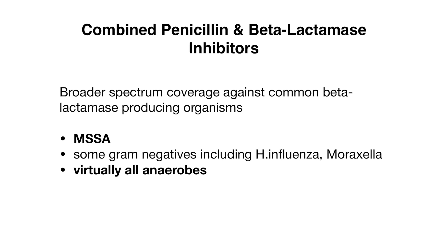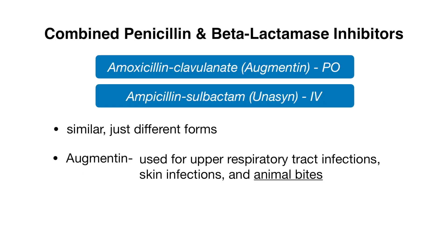With beta-lactamase inhibitor combinations, there is coverage against MSSA, some gram-negatives including H. influenzae and Moraxella, and virtually all anaerobes. The first combination is Augmentin, or amoxicillin-clavulanate, which is the oral version. There is also ampicillin-sulbactam, known as Unasyn, given in IV form. In terms of coverage these two are very similar, just administered differently. In an outpatient setting, Augmentin is used primarily for upper respiratory tract infections, skin infections, and animal bites, and can be used as a first-line agent for many of these infections.